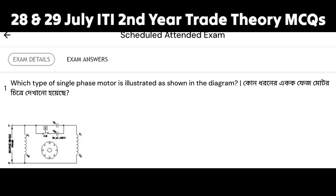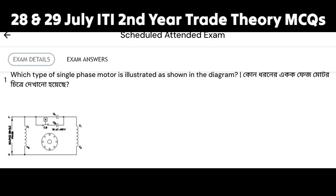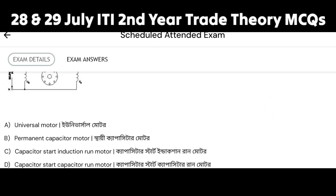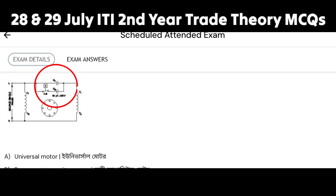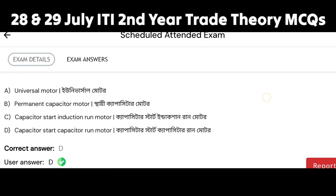I'm going to talk about the MCQ questions. Which type of single-phase motor is illustrated as shown in the diagram? We look at C1 and C2, and option D is the correct answer: capacitor start, capacitor run motor.